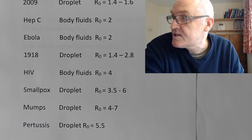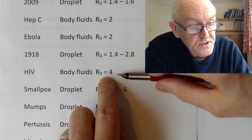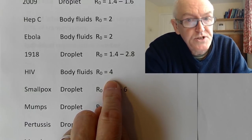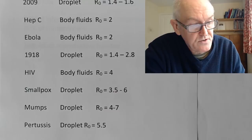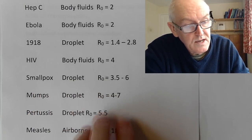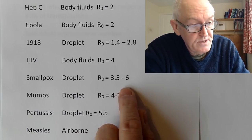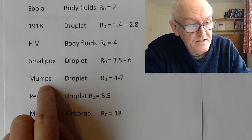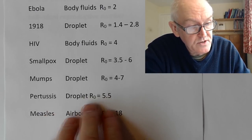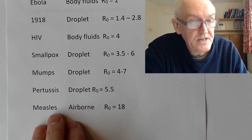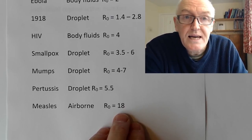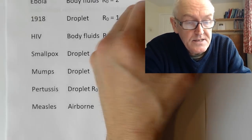HIV, spreading via body fluids, has a high R0 largely because of behaviour — multiple sexual partners or sharing needles among intravenous drug users. Smallpox, now thankfully eradicated, was a droplet infection with a high R0. Mumps has an R0 of four to seven. Pertussis and German measles have an R0 of around 5.5. Measles is one of the most infectious diseases, being both droplet and airborne, with an R0 that can be up to 18, with figures of 12 to 18 typically reported.